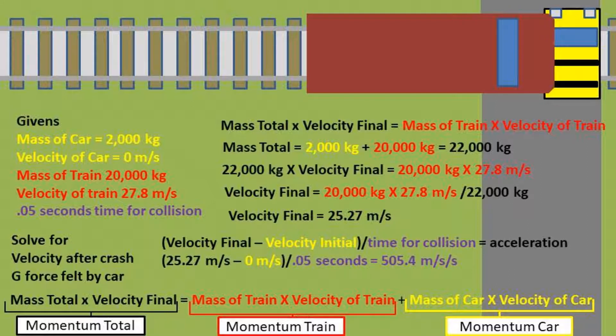Now we need to find the acceleration felt by the car. We can do this by taking the delta velocities, or in other words the change of velocity, over the time of the collision. We get that the car's acceleration was 505.4 meters per second per second.